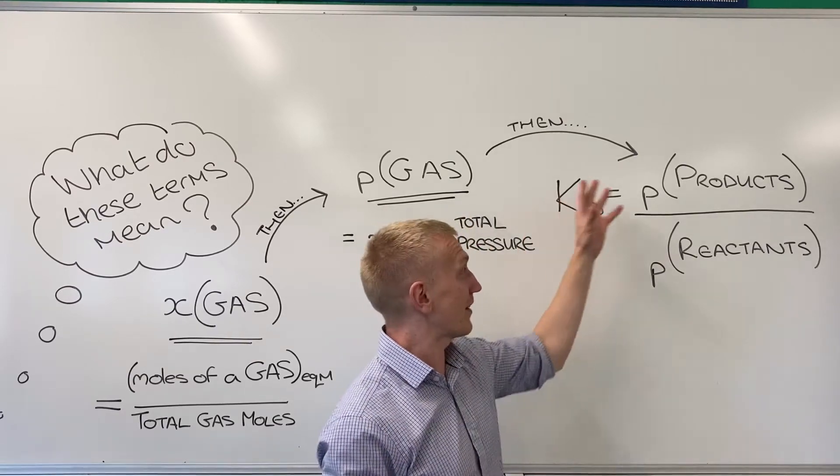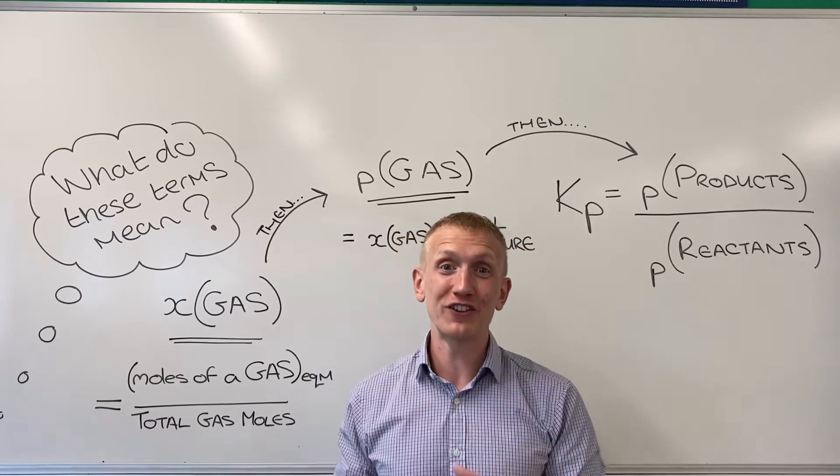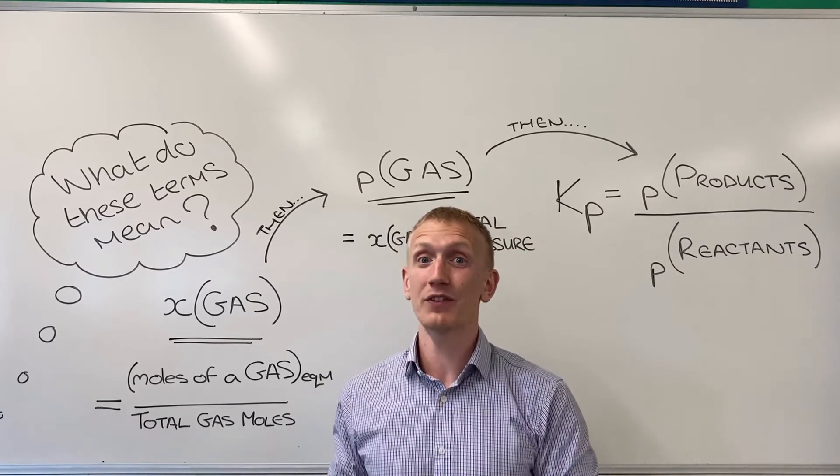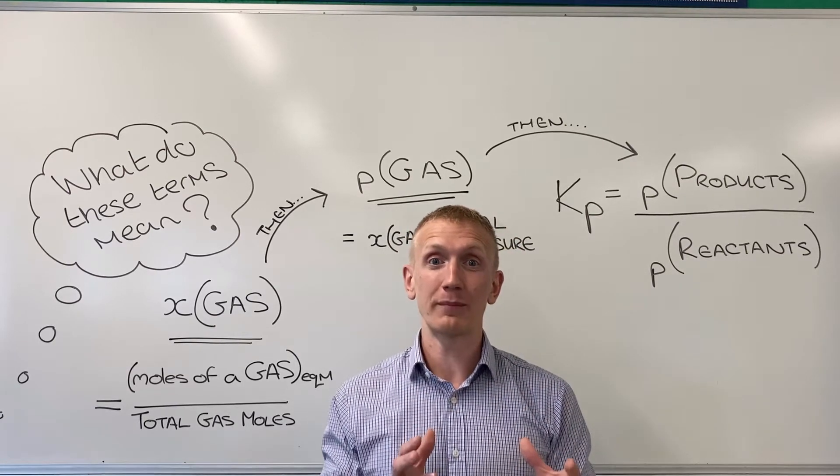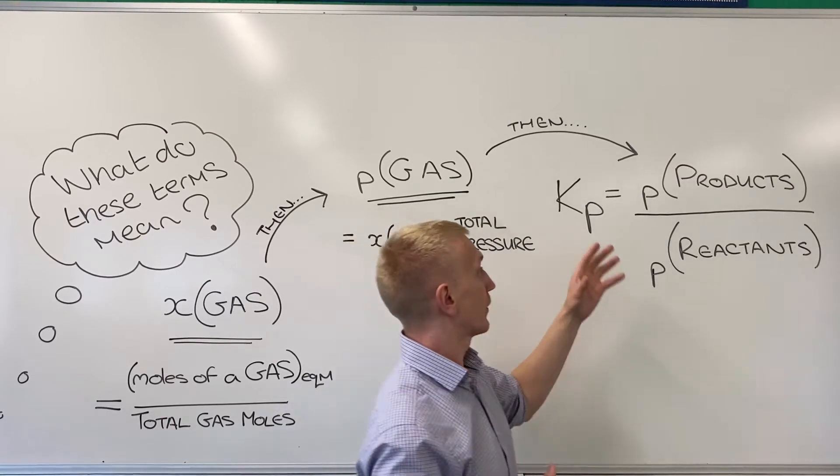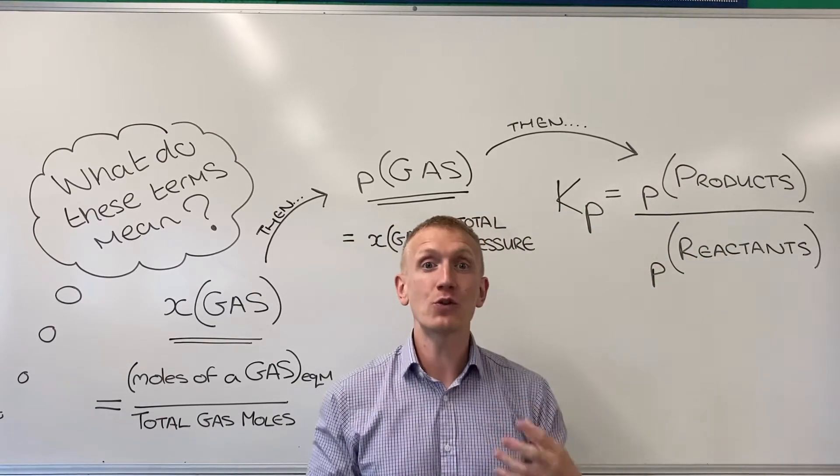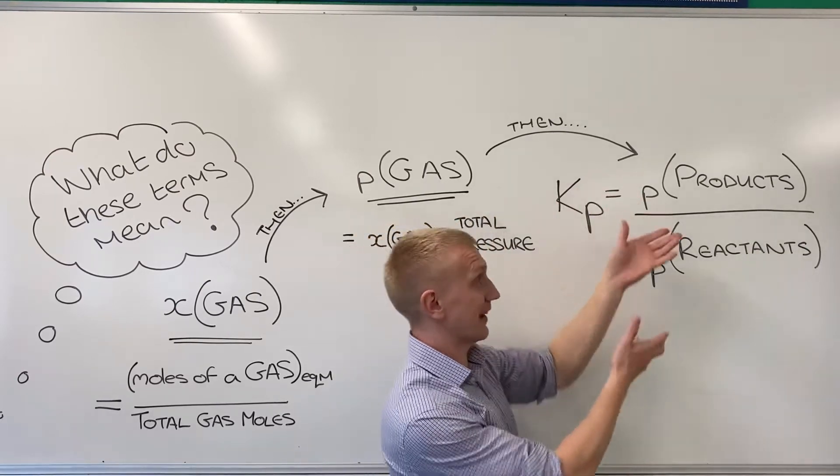The reason we have this separate calculation when looking at gaseous equilibrium is because the concentration of gases can be quite difficult to measure. But there is a directly proportional relationship between concentration and pressure, and so we use a pressure-based equilibrium constant calculation when we have a gaseous equilibrium and we call it Kp.